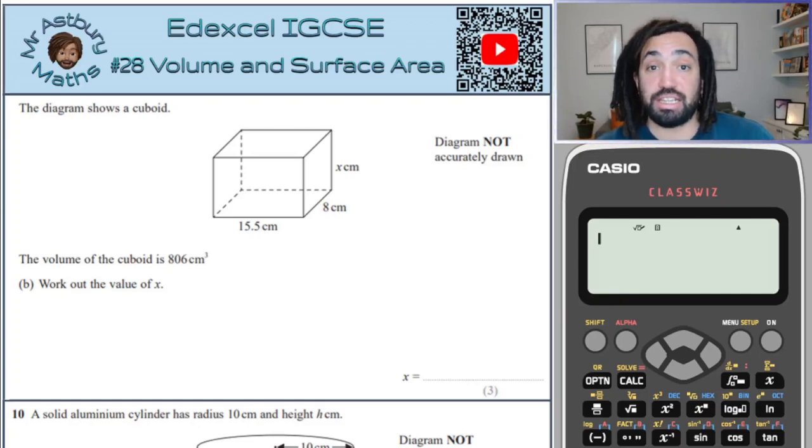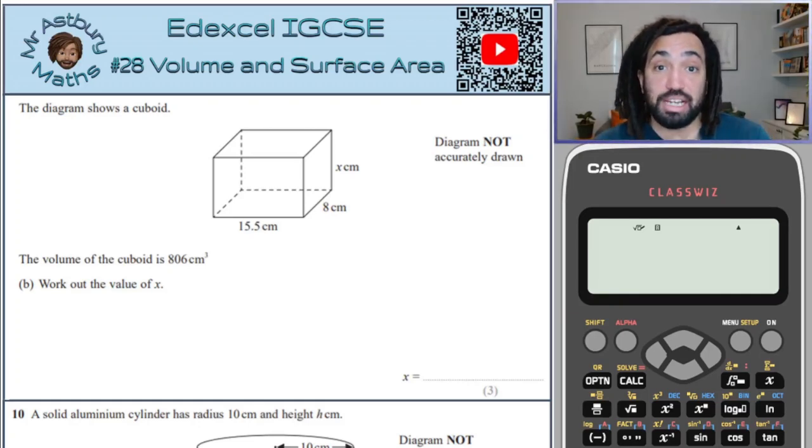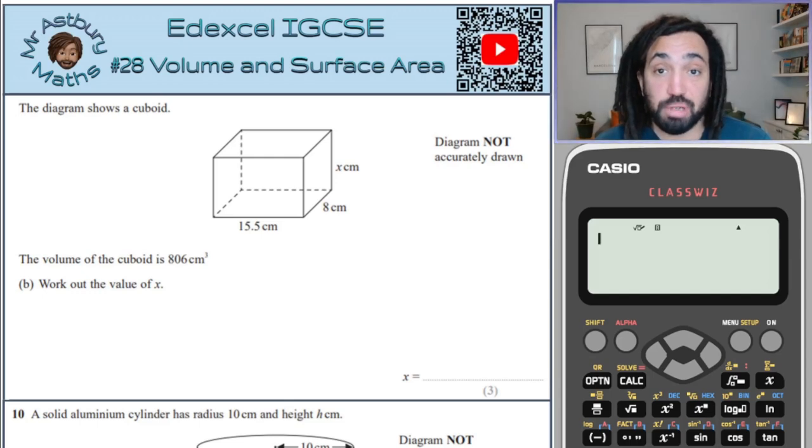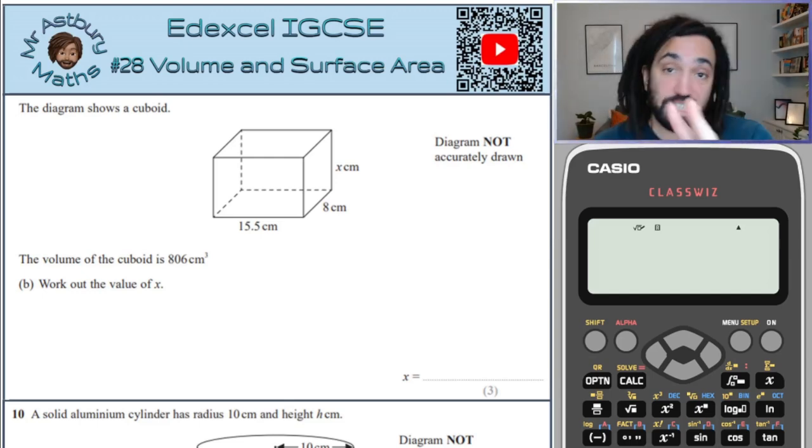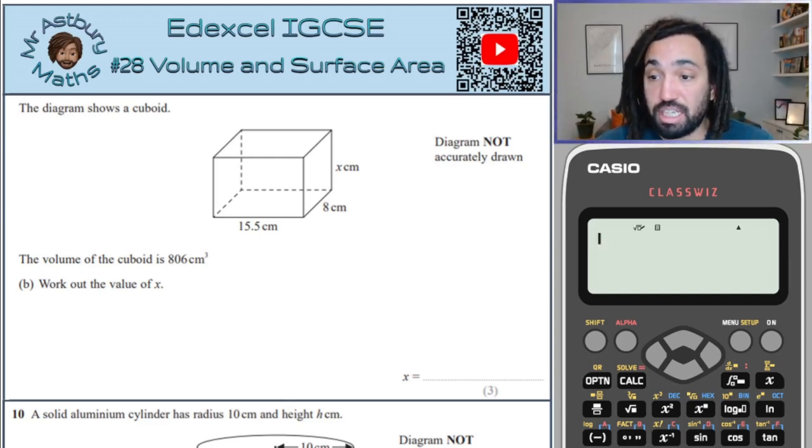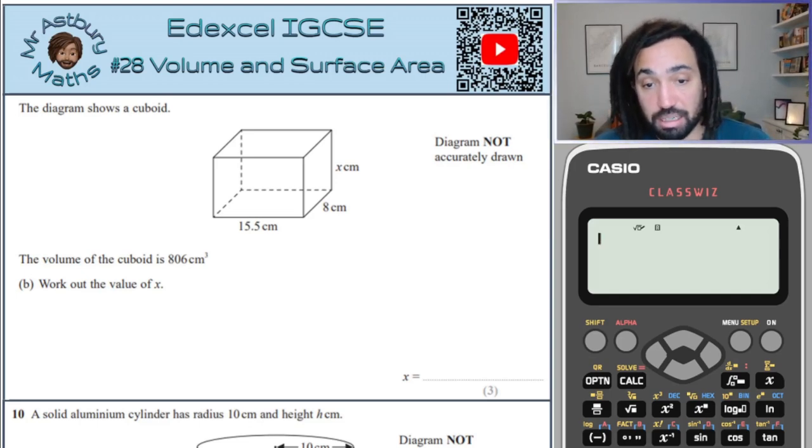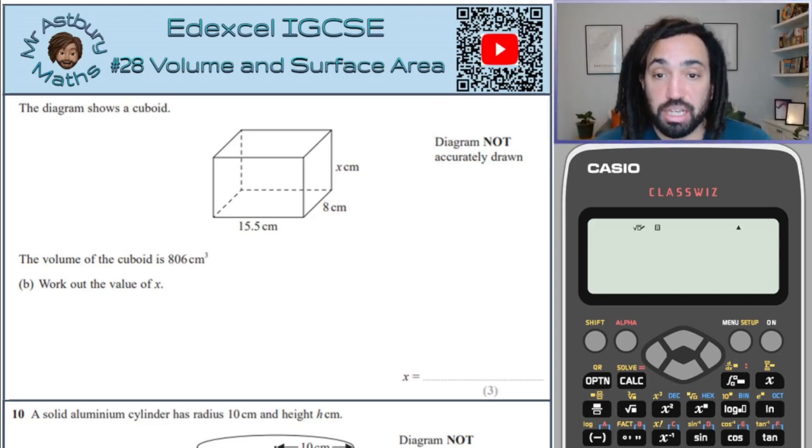Hello, my name is Mr. Asbury and this is Volume and Surface Area. This is my Edexcel IGCSE Exam Questions Per Topics series. It's the second time I've done these types of series. If you've not seen series one, check it out. Okay, so we have got the volume of, this is a cuboid, and a cuboid is a type of prism.